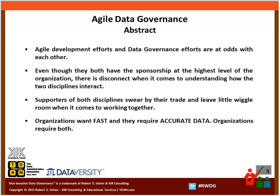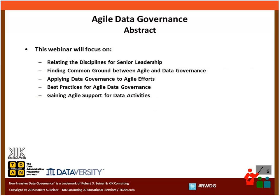Even though both disciplines have sponsorship at the top levels of the organization, there seems to be a disconnect: can we do agile and do data governance at the same time? Supporters of both disciplines say their work is the most important thing. Data people say we need to focus on the data. Agile people say we need to deliver our projects quickly and effectively, in high quality. Organizations want things done fast but also want to make sure that the data is accurate.